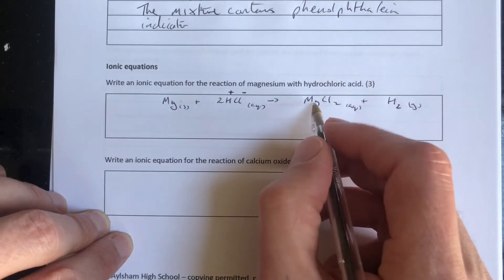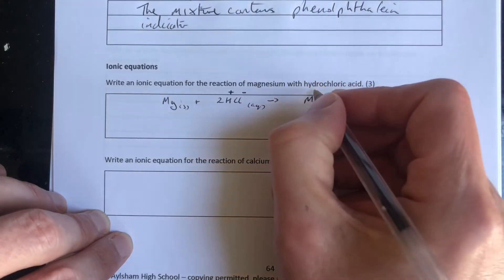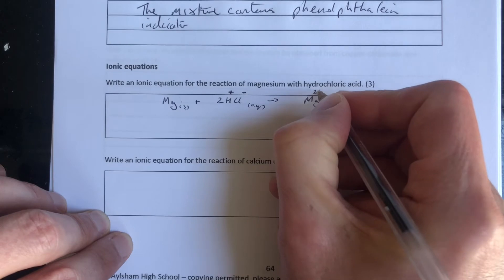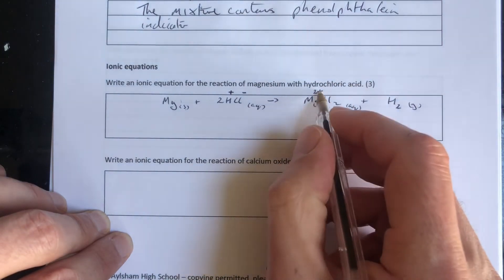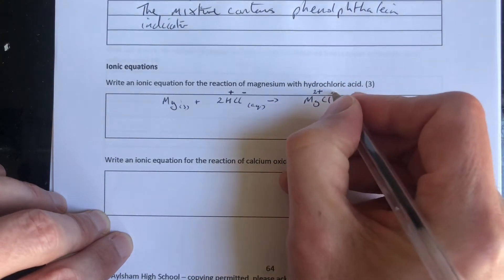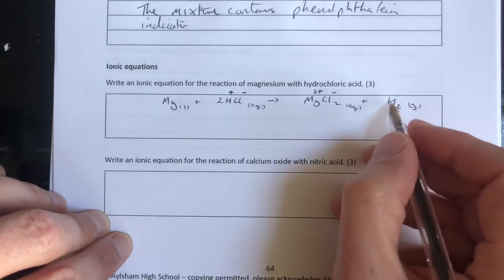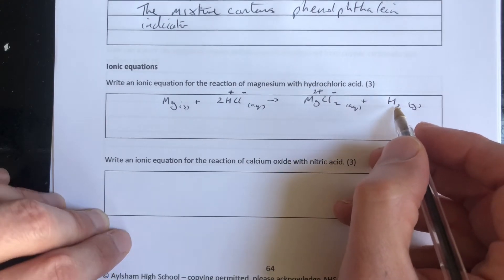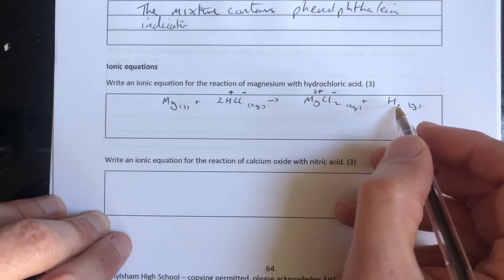Magnesium is an ionic compound here. Magnesium is in group two of the periodic table, two electrons on its outer shell, so it wants to lose those two electrons. It forms the two plus charge. Chloride ions, single negative charge. Hydrogen here is covalent, so covalent substances are not charged.